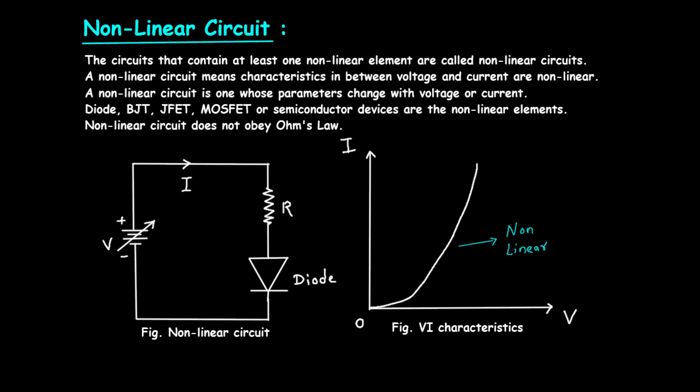Second, signal processing. Transistors are used in amplifiers to increase the power of signals and in switches to control electronic signals. Third, voltage regulation. Zener diodes are used to maintain a constant voltage level in power supplies. These applications leverage the unique properties of non-linear components to perform specific functions that linear components cannot achieve.